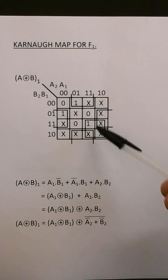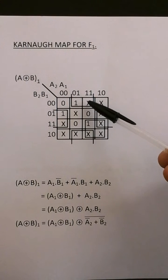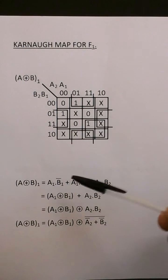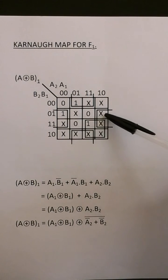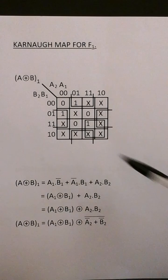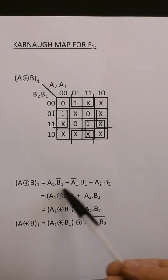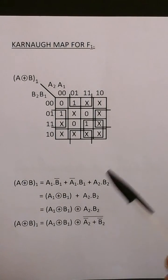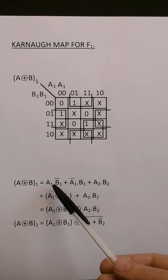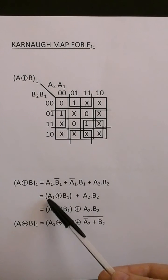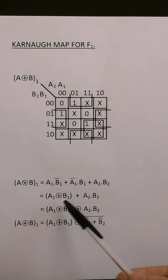So we have the 9 entries of the truth table here for f1. And we have three loops. That's A2 and B2. That is not B1 and A1. And this one is not A1 and B1. So this is the definition of the exclusive or gate. The sum of products term expression for the exclusive or gate.